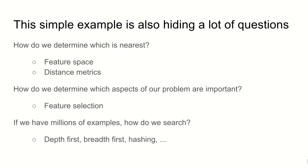This simple example is also hiding a lot of questions. So how do we determine which robot is nearest? How do we determine which solution is nearest? How do we determine which symptoms are a best match for the current symptoms? And for this, we need some kind of space. So we need to be able to have an idea of what is nearer to which parts of the space and nearer to other parts of the space. And we also need a distance measure so we can compare things and actually know which is closest.